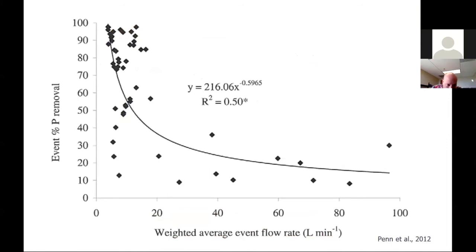Another important aspect of these structures is the flow rate through them. Under heavy rainfall and high flow events, efficacy decreases — as average flow rate increases for any given runoff event, we're proportionately removing less phosphorus. That makes sense because the residence time is shorter under high flow, and we can't maintain the slow velocity needed to remove the phosphorus from the system.